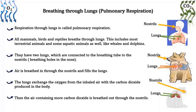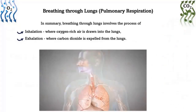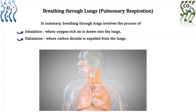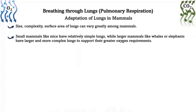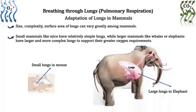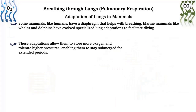Then the air containing more carbon dioxide is breathed out through the nostrils. In summary, breathing through lungs involves inhalation, where oxygen-rich air is drawn into the lungs, and exhalation, where carbon dioxide is expelled from the lungs. Adaptation of lungs in mammals: the size, complexity, and surface area of lungs can vary greatly among mammals. Small mammals like mice have relatively simple lungs, while larger mammals like whales or elephants have larger and more complex lungs to support their greater oxygen requirements. Mammals that require more oxygen due to higher metabolic rates have larger lung surface areas.